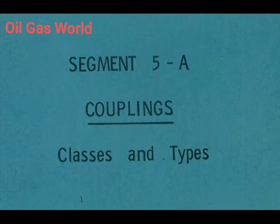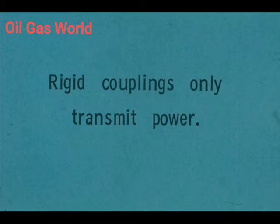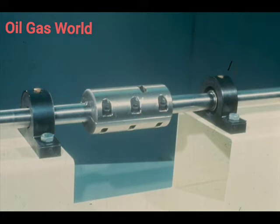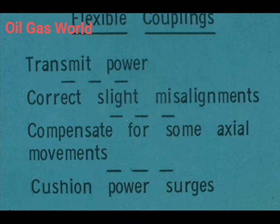There are two basic classifications of couplings that we will deal with in this course: the rigid and flexible classes. The rigid couplings are the simpler of the two, generally used in applications where transmitting power from one machine to another is the only concern — only expected to lock two shafts together, making them operate as a single shaft. The flexible couplings also transmit power but are designed to fulfill other requirements: correcting misalignments, compensating for axial movement, and cushioning power surges.